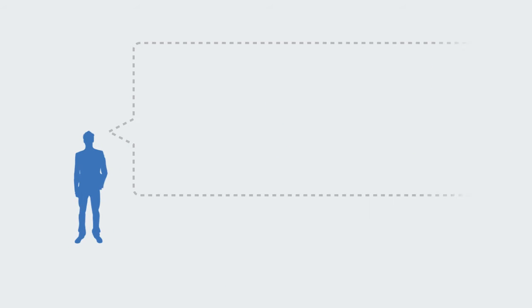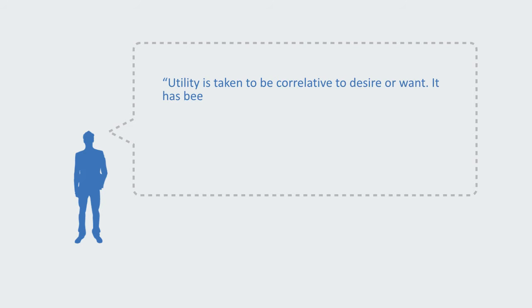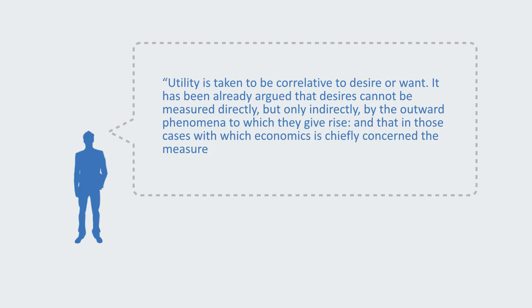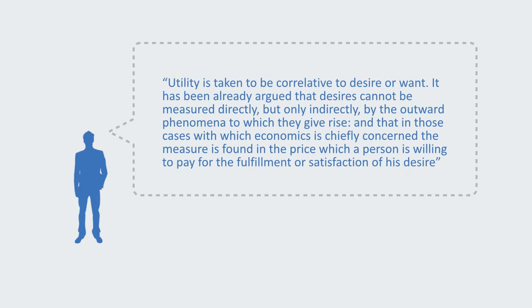The economist Alfred Marshall put it like this: utility is taken to be correlative to desire or want. It has been already argued that desires cannot be measured directly, but only indirectly by the outward phenomena to which they give rise, and that in those cases with which economics is chiefly concerned, the measurement is found in the price which a person is willing to pay for the fulfillment or satisfaction of his desire.